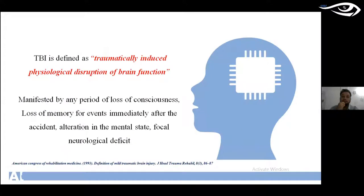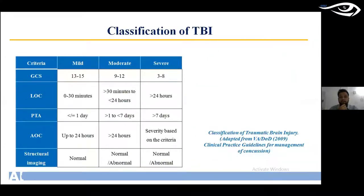The American Congress of Rehabilitation Medicine describes TBI as a traumatically induced physiological disruption of brain function, which can be triggered by loss of consciousness or any kind of memory loss following the incident. TBI is classified as mild, moderate, and severe based on standard norms including the Glasgow Coma Scale, the loss of consciousness scale, post-traumatic amnesia, and the alteration of consciousness scale.